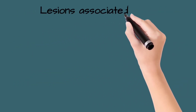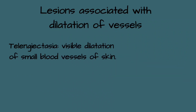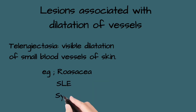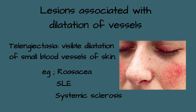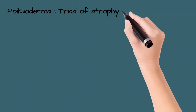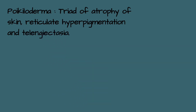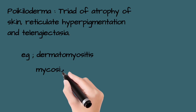Lesions associated with dilatation of vessels include telangiectasia, which is visible dilatation of small blood vessels of the skin, seen in rosacea, systemic lupus erythematosus, and systemic sclerosis. Poikiloderma is a triad of atrophy of skin, reticulate hyperpigmentation, and telangiectasia, seen in dermatomyositis and mycosis fungoides.